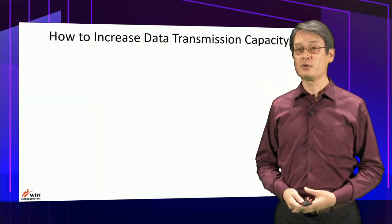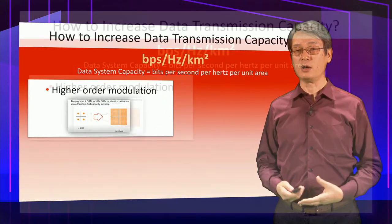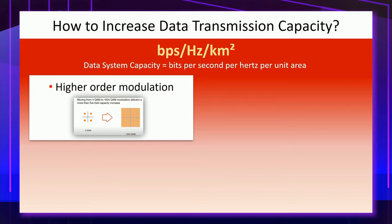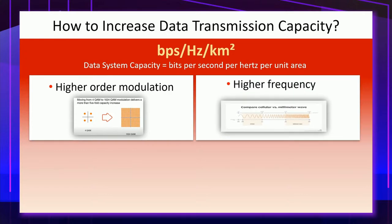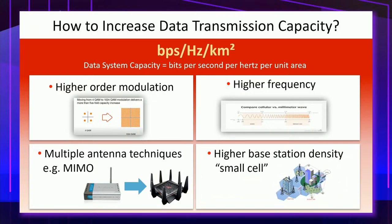How do we increase data transmission capacity? We can use higher-order modulation signals to increase bits per second, and use higher frequency spectrum where much wider bandwidth is available. Multiple access techniques can effectively multiply data transmission capacity. Installing more small base stations can also increase network capacity per area.